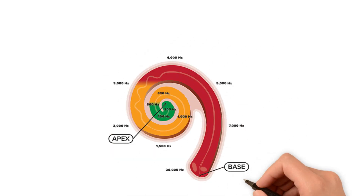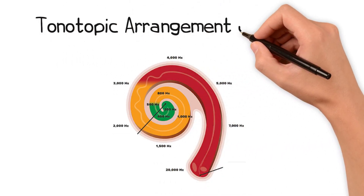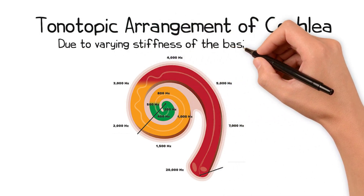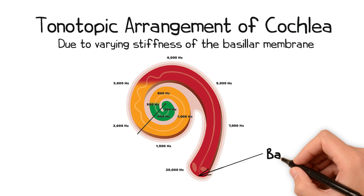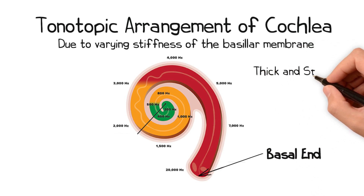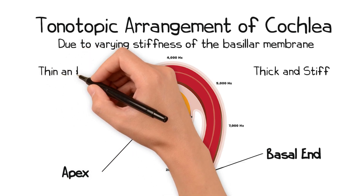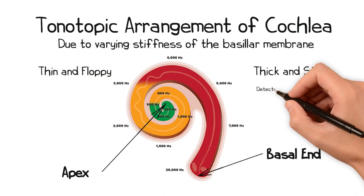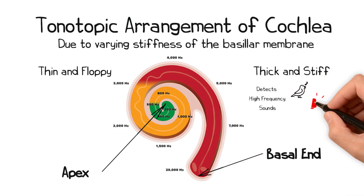Depending on the location along the cochlear duct, different hair cells respond to different pitches of sound. This arrangement is described as tonotopic and is due to the stiffness of the basilar membrane. The basilar membrane is thickest and stiffest at the basal turn of the cochlea, and thinnest and floppiest towards the apex. Higher frequency sounds are able to exert their vibrational energy best in stiffer media, and so are detected by hair cells at the basal turn.